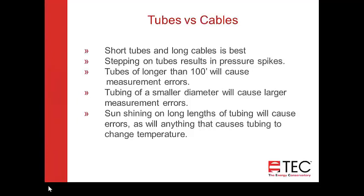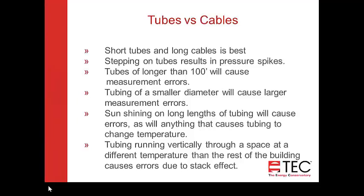If there's a temperature change somewhere along the length of tubing caused by the sun or something else, that can cause fluctuations. If you're running tubing through a vertical space at a different temperature — for example, running it outside and back inside the building — that tubing will be at a different temperature outside and you'll get fluctuations in pressures caused by that temperature difference. So it's not advisable to run tubing through a space that's at a different temperature. Wherever you can, use short tubes and long cables.